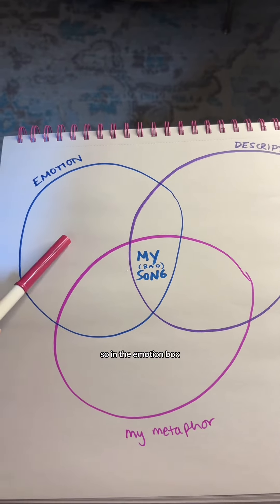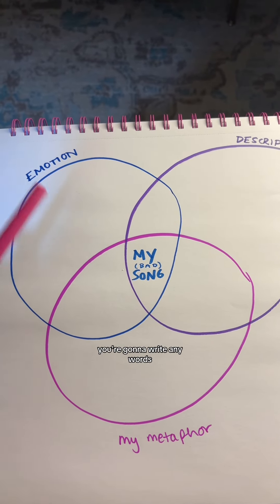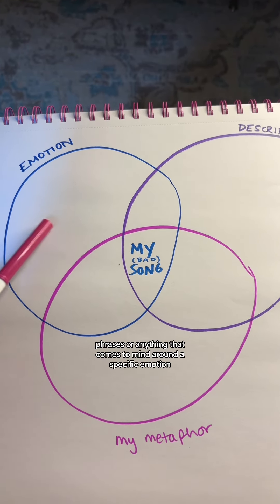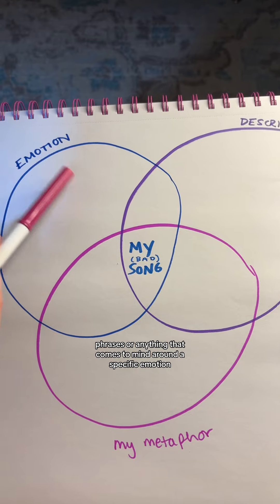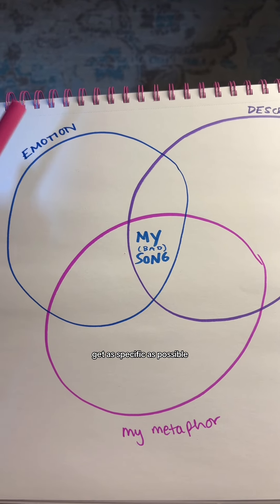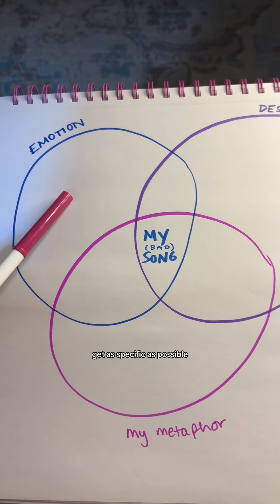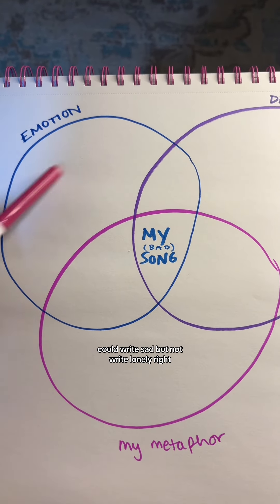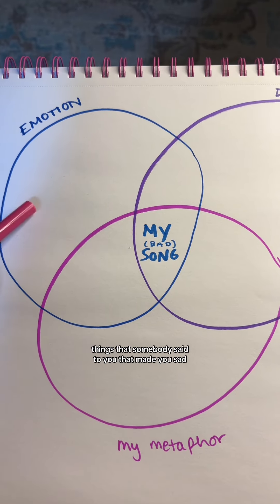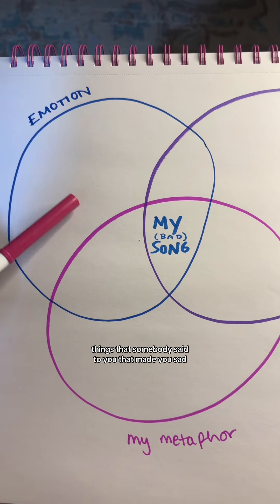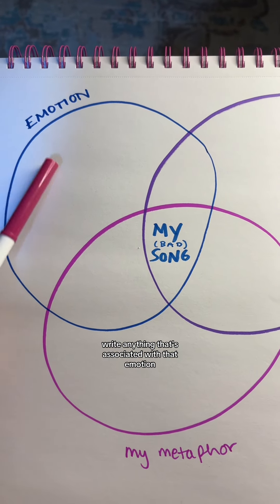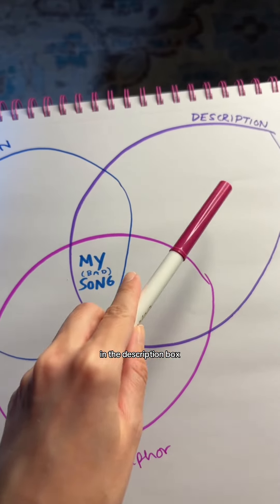In the emotion box, you're going to write any words, phrases, or anything that comes to mind around a specific emotion — get as specific as possible. You could write 'sad,' but instead write 'lonely.' Write things that somebody said to you that made you sad. Write anything that's associated with that emotion.